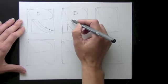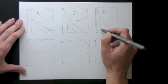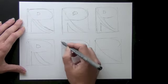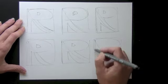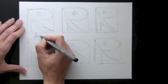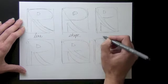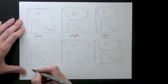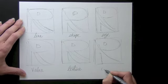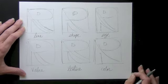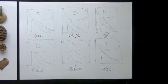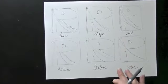And then what you are going to do, as well as draw in your letter, is label each text box with the elements of art: line, shape, size, value, texture, and color. I will bring in some nature to inspire us. And let's start out with line.